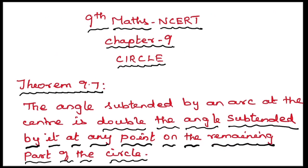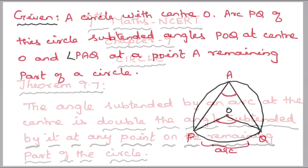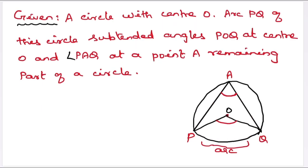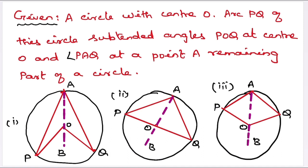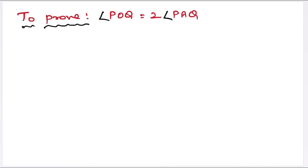And then, it is double the angle subtended by it at any point on the remaining part of the circle. So, the remaining part of the circle is the portion above the arc PQ — that is, the portion PAQ at point A. To prove: angle POQ is equal to two times angle PAQ.